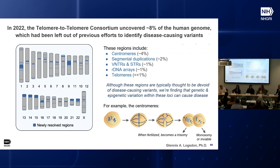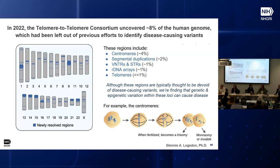Centromeres are large repetitive regions on every chromosome that ensure accurate chromosome segregation. Because of their repetitive nature, they undergo homologous recombination, have duplications and deletions that can impact kinetochore location and spindle microtubule attachment during meiosis. A deleterious variant within a centromere can lead to chromosome missegregation resulting in trisomy or monosomy disorders, infertility, miscarriages, and cancer. Along with the other 8% of the genome, we should focus on these regions when looking at genetic variation and disease.